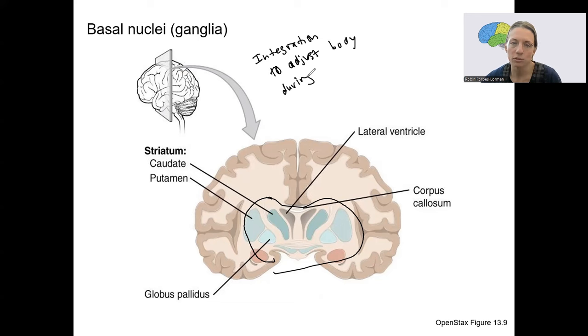So involved in motor control. And not the initiation of the movement, because that was that pre-motor cortex, but involved in adjusting body position. Information comes from the motor areas of the cortex, from the cerebellum, and from other places in the central nervous system to integrate and make subconscious adjustments to body position, limb position, to adjust motor output.